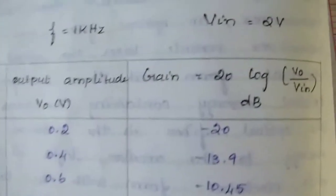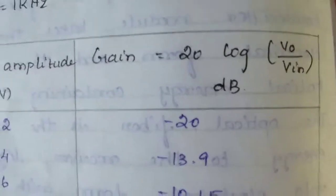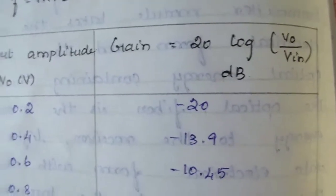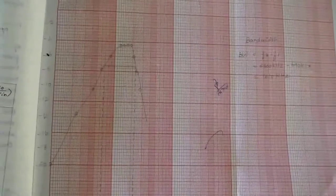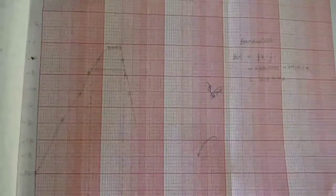Then we calculate the gain from this formula: Gain = 20 log(V_output/V_input). After that, we draw the graph on log paper, and we will get the output like this.